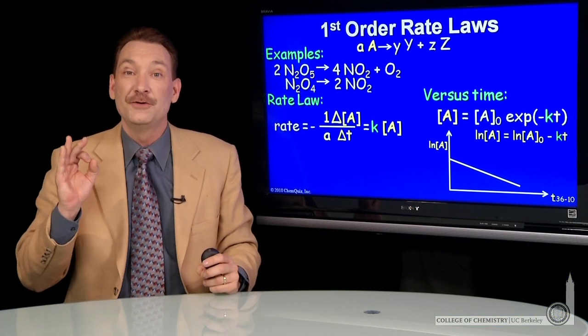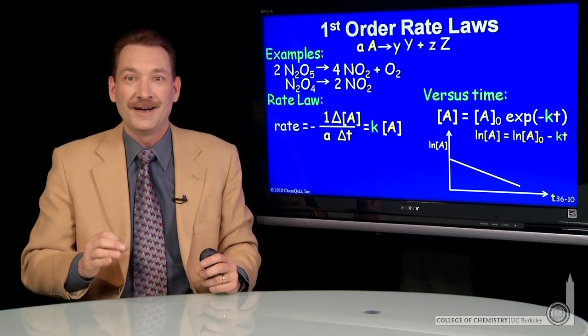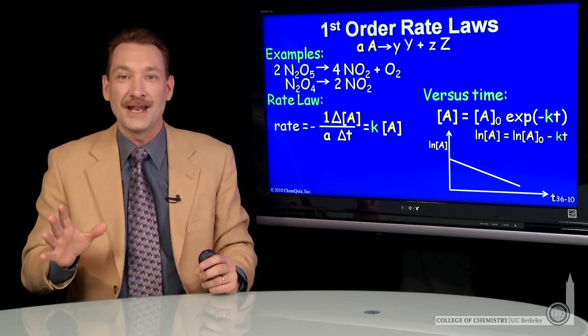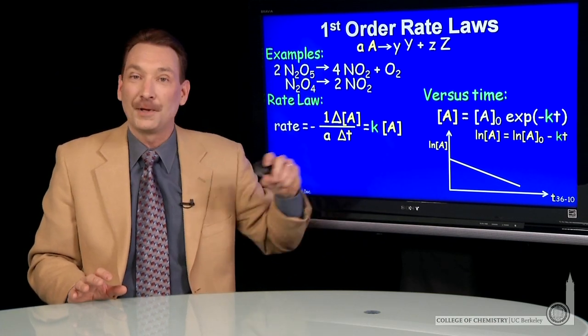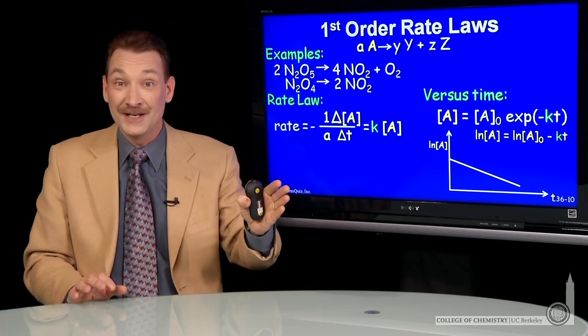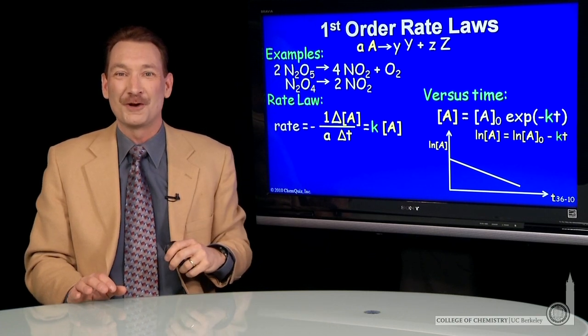And that's important. That's actually how you determine if a chemical reaction has first order kinetics. You measure concentrations versus time, take the natural log, and plot versus time. If it's linear, that means there's first order kinetics.